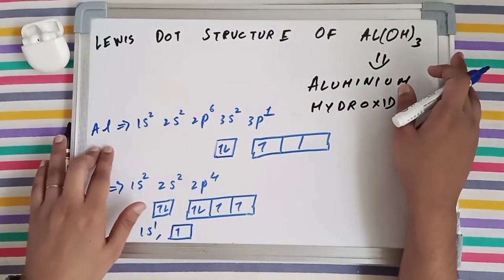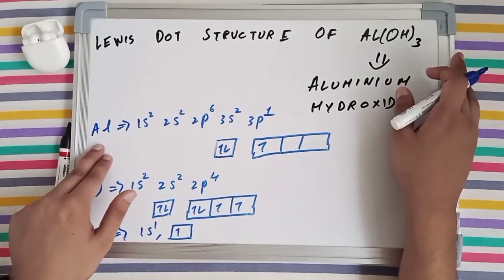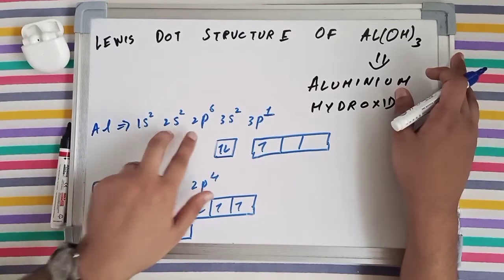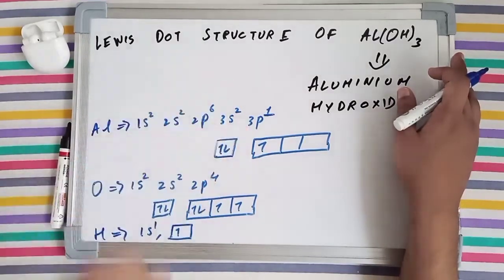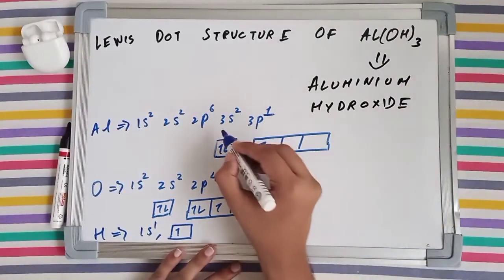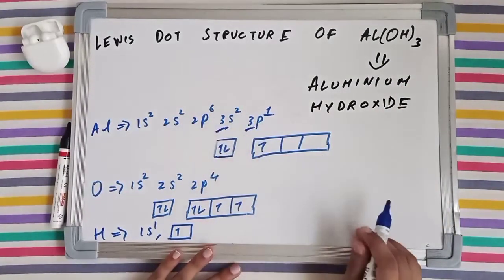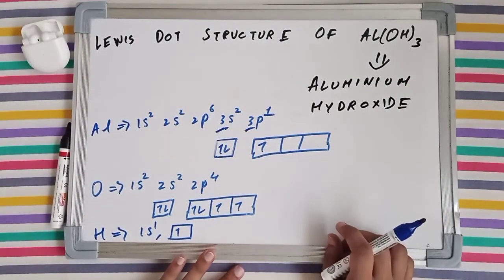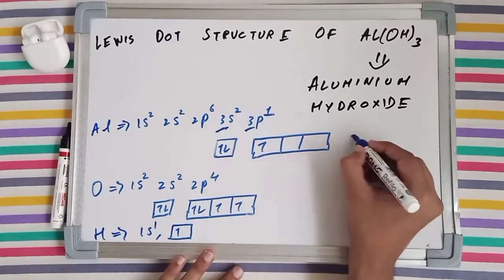For that we need to write the electronic configuration. The electronic configuration for aluminum is 1s2, 2s2, 2p6, 3s2, and 3p1. The valence shell is the third shell, the outermost shell. Valence electrons are those electrons which are present in the outermost shell, so 2 plus 1, which is 3 electrons.